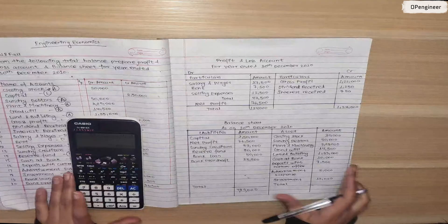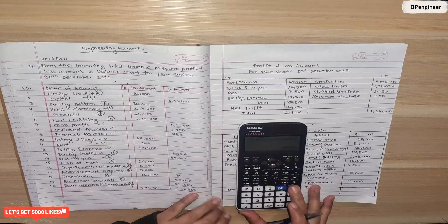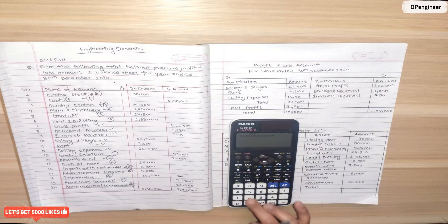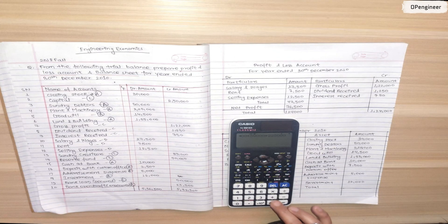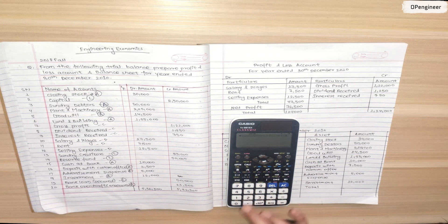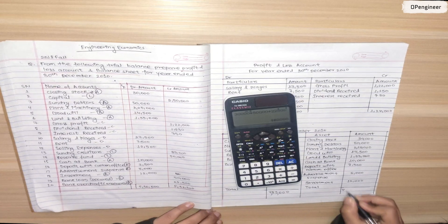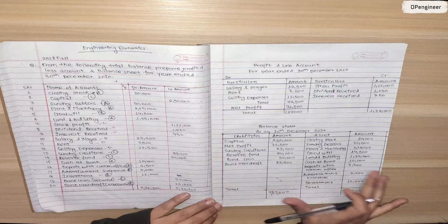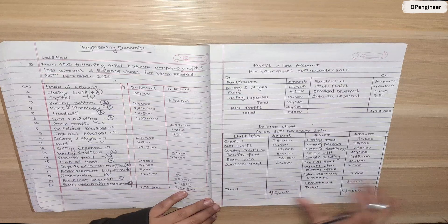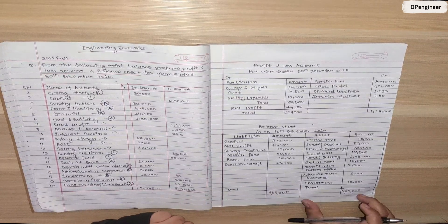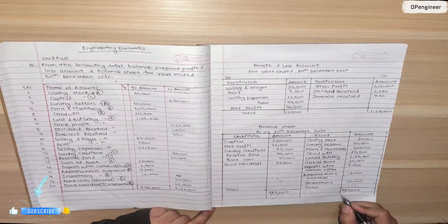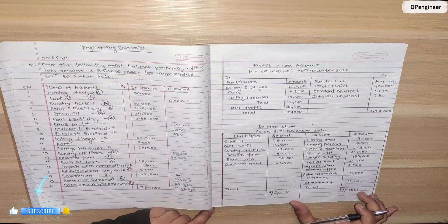The total liabilities column is: capital $2,50,000 plus net profit $76,500 plus sundry creditors $39,000 plus reserve fund $50,000 plus bank loan $50,000 plus bank overdraft $23,500, giving a total of $4,89,000. The total assets column also comes to $4,89,000, so the asset column and liabilities column totals are equal — the balance sheet is balanced.